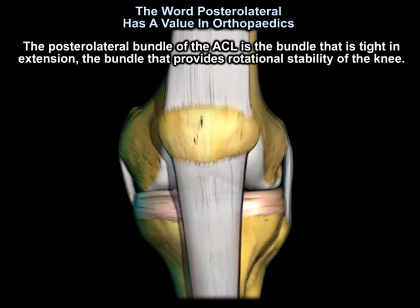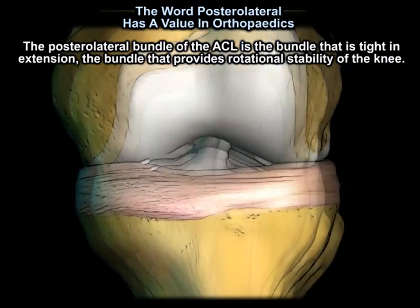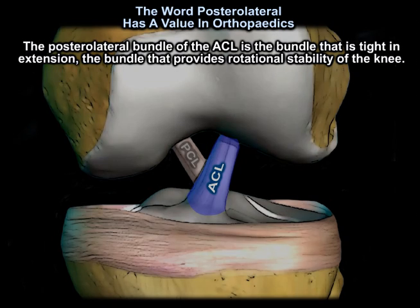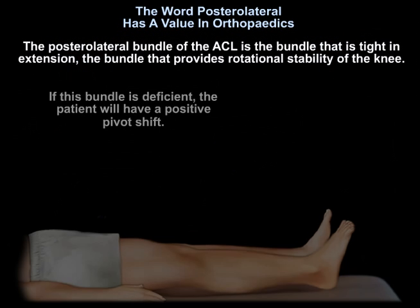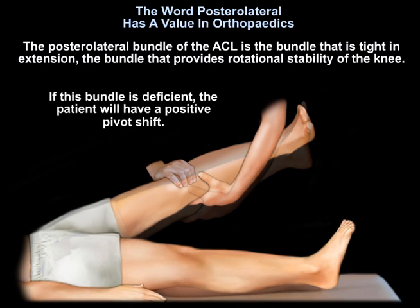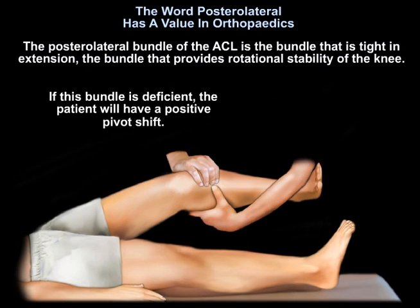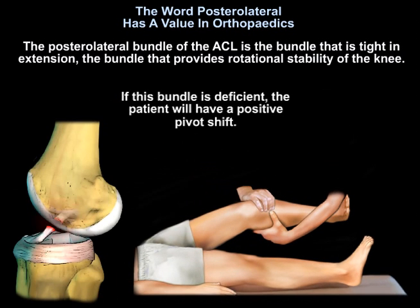The posterolateral bundle of the ACL is the bundle that is tight in extension and provides rotational stability of the knee. If this bundle is deficient, the patient will have a positive pivot shift.